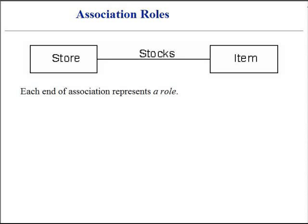Each band of an association is called a role of the association. Roles can optionally have a name, multiplicity expression, and navigability arrow.